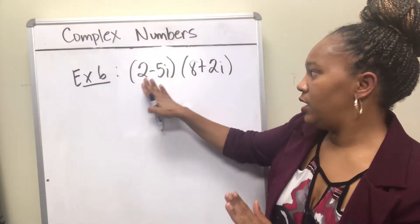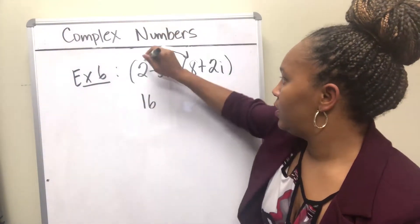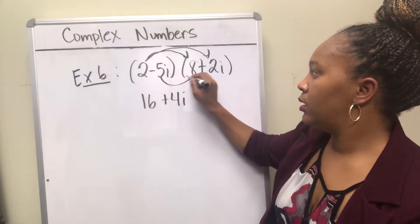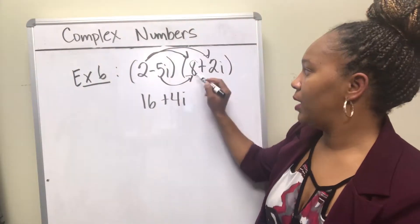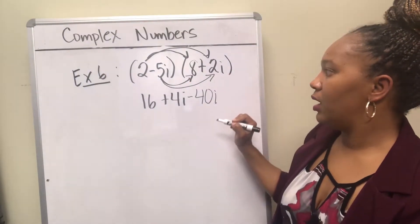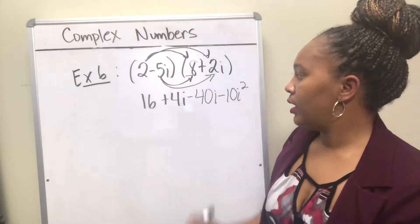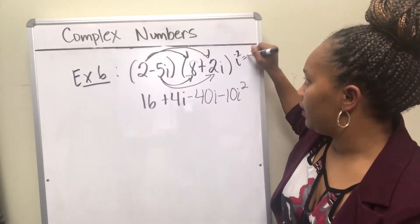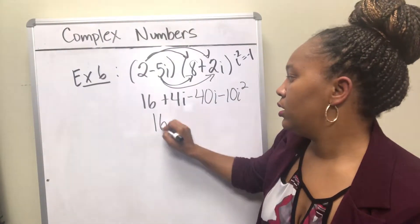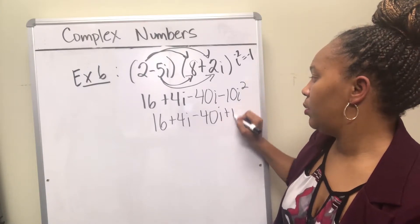We're going to multiply 2 minus 5i by 8 plus 2i. So again, I want to multiply each of these by each of these. So 2 times 8 is 16. 2 times 2i is 4i. Negative 5i times 8 is negative 40i. And negative 5i times 2i is negative 10i squared. And so remember i squared is equal to negative one. So negative 10 times negative one is a positive 10.